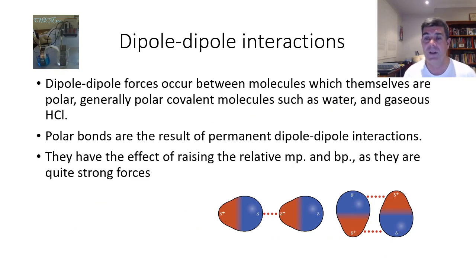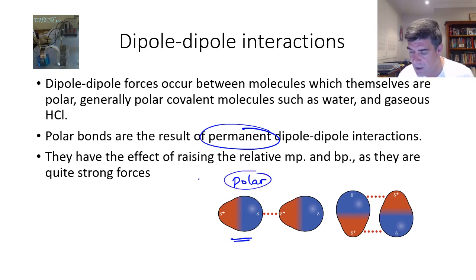So dipoles occur between molecules which are polar, so we have to have polarity in the molecule. And water, gaseous hydrogen chloride is one of the ones that are there. What happens with these dipoles is we have permanent dipoles. That is, because they are polar, there is a positive and a negative region, and you can see those displayed here.